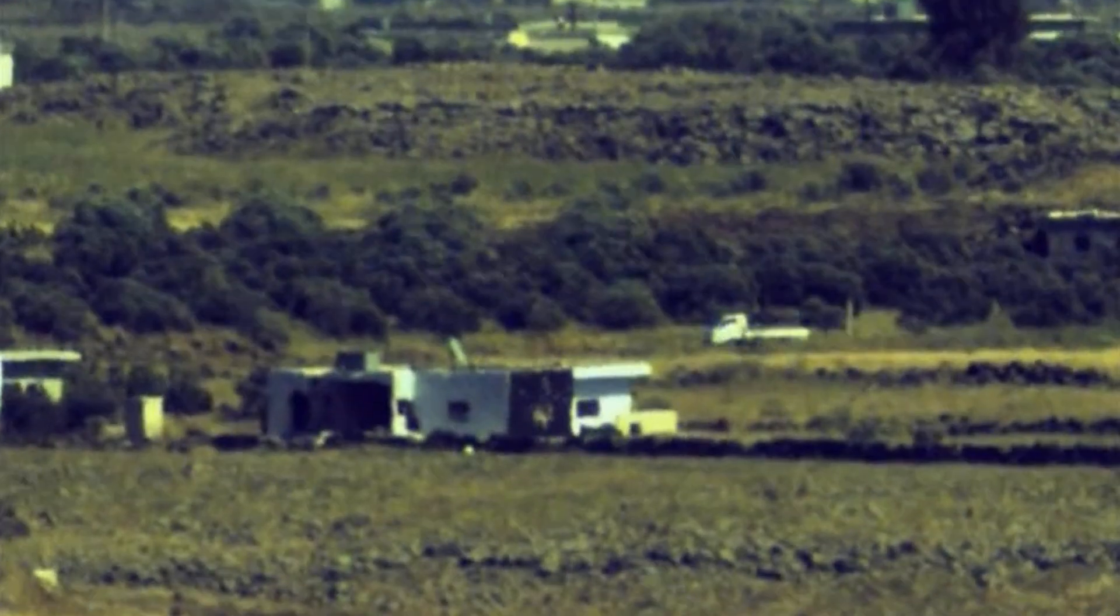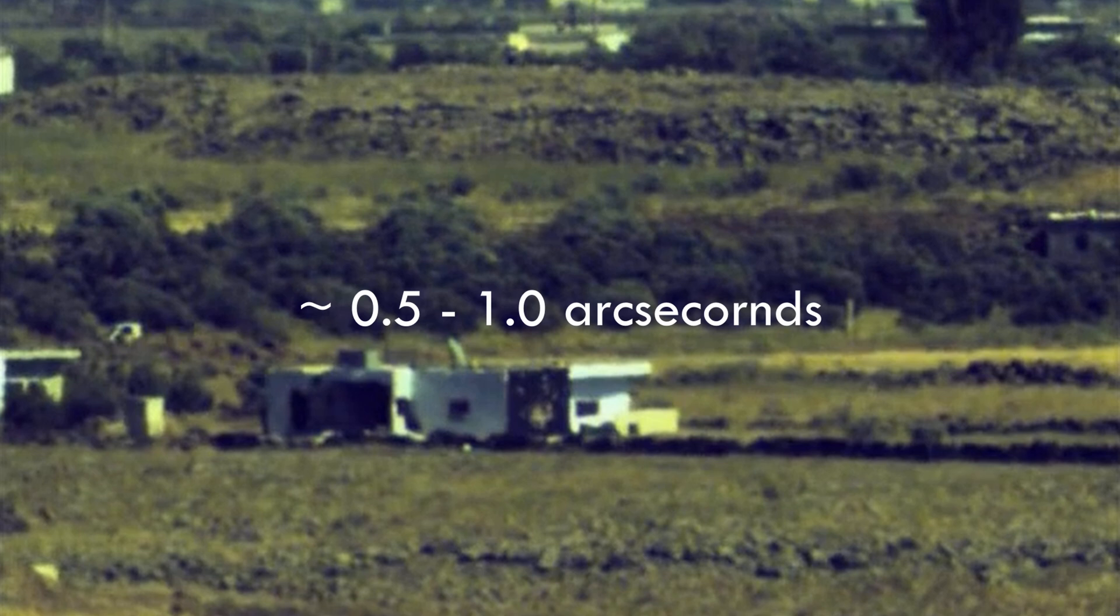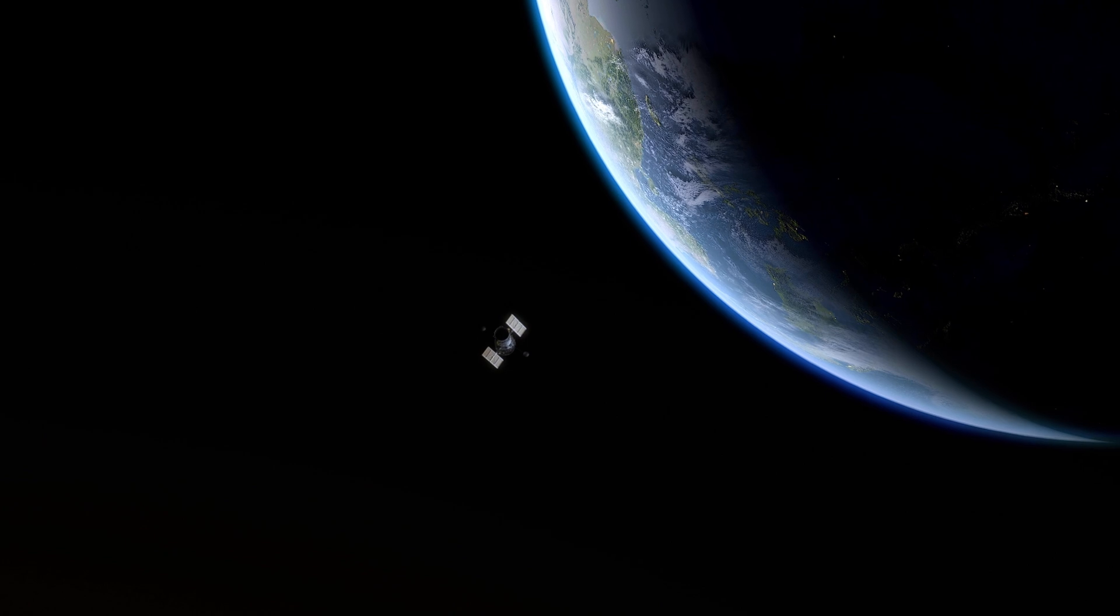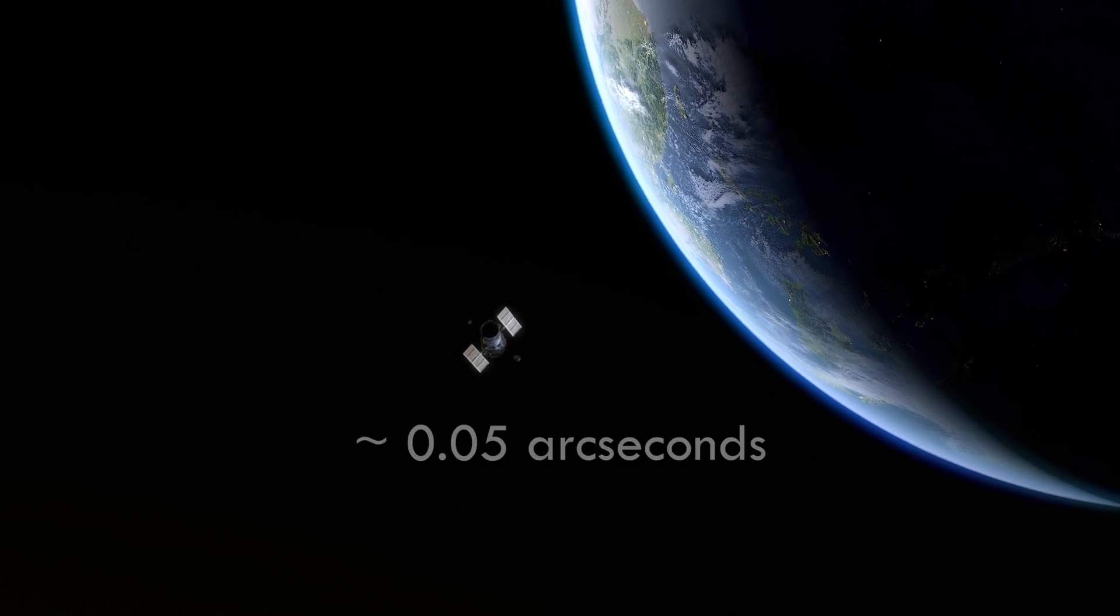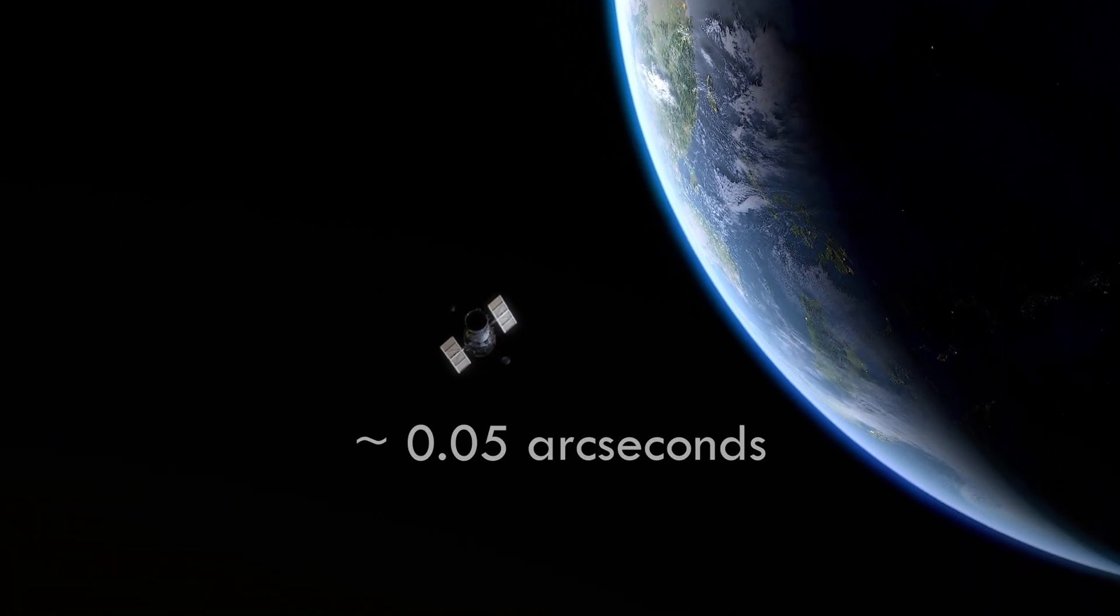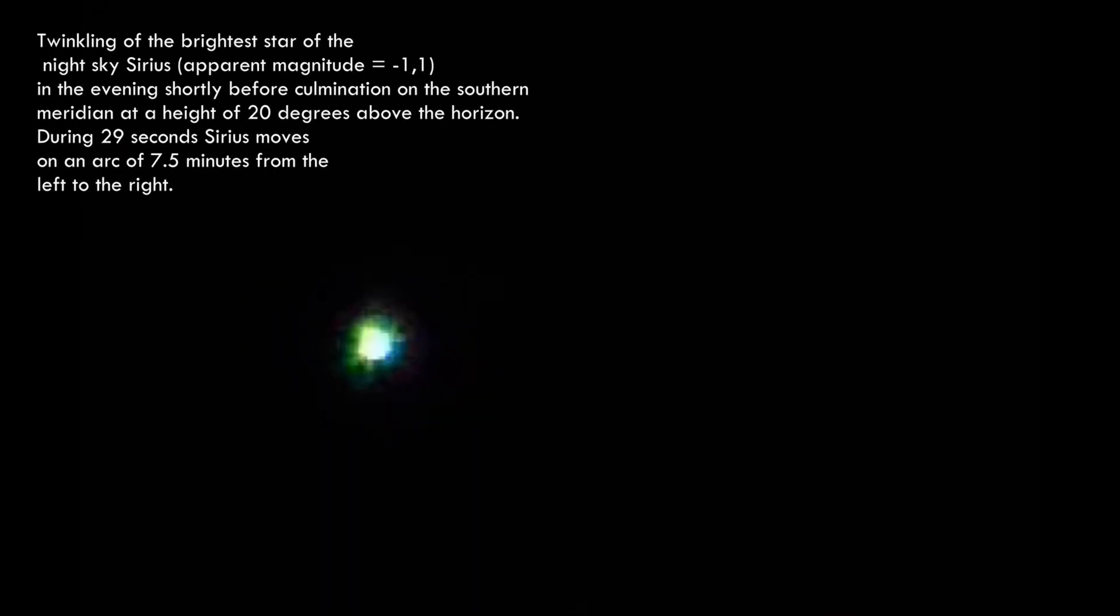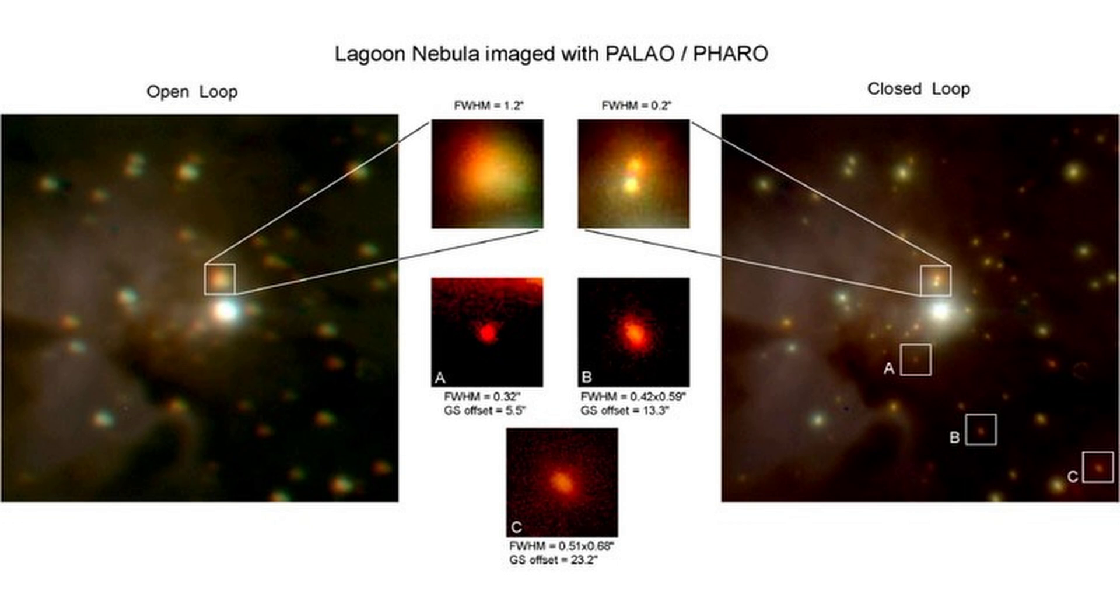Since the turbulent cells evolve on millisecond timescales, the result is a constantly twinkling image that blurs to about 0.5 to 1 arcsecond of resolution at a good site. For comparison, Hubble Space Telescope delivers 0.05 arcseconds. This blurring, called seeing, smears out details. Two stars closer than the seeing limit appear as one, and faint structures in galaxies get washed out.